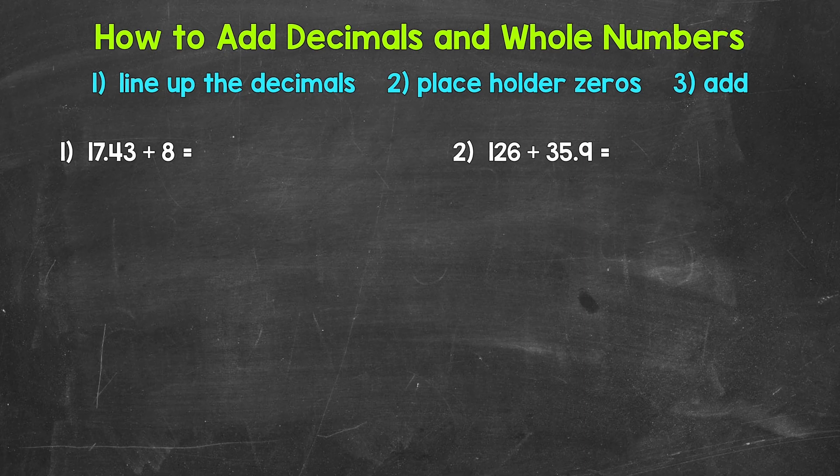Whenever we have an addition problem involving a decimal and a whole number — so either a decimal plus a whole number or a whole number plus a decimal — we use the same steps we use when adding two decimals: line up the decimals, use placeholder zeros, and add.